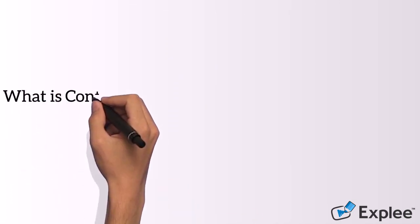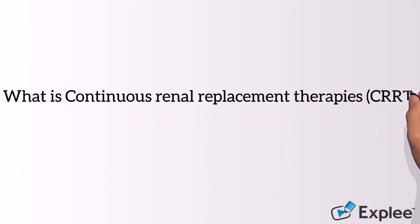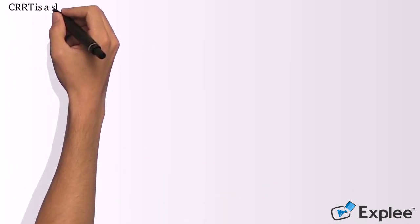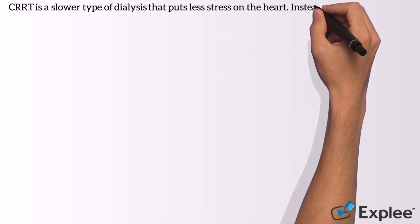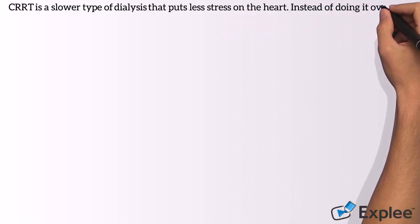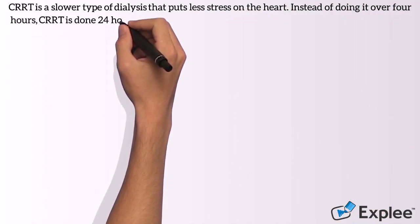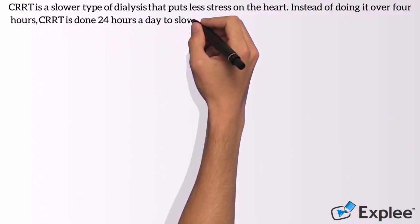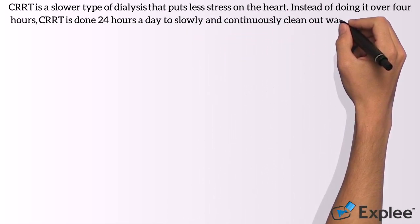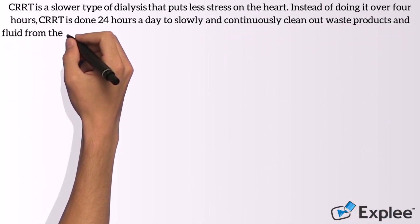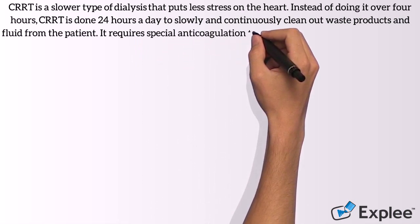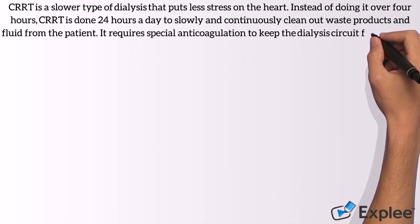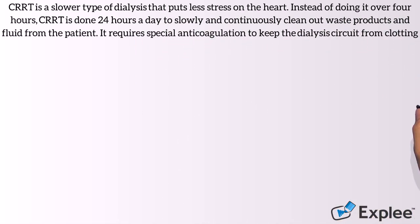What is continuous renal replacement therapy? CRRT is a slower type of dialysis that puts less stress on the heart. Instead of doing it over 4 hours, CRRT is done 24 hours a day to slowly and continuously clean out waste products and fluid from the patient. It requires special anticoagulation to keep the dialysis circuit from clotting.